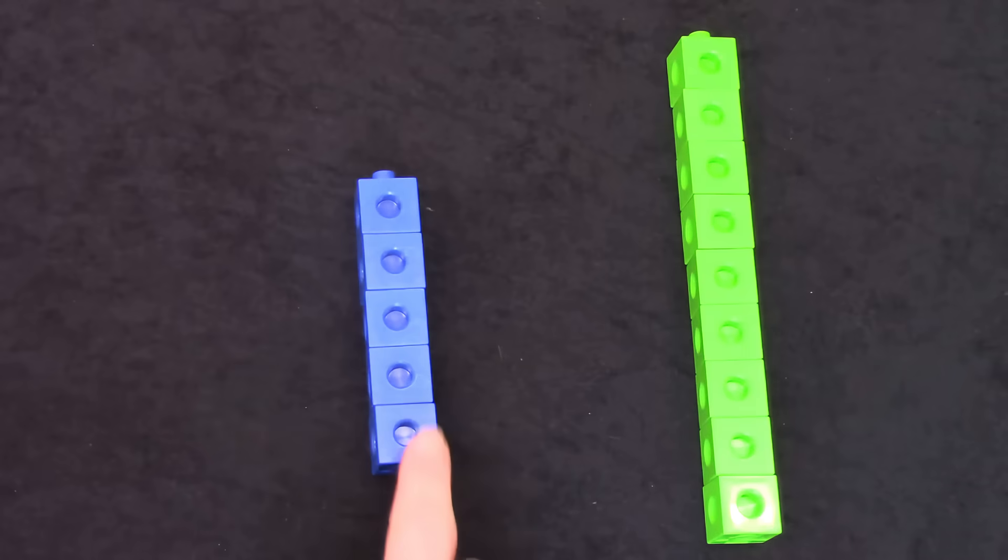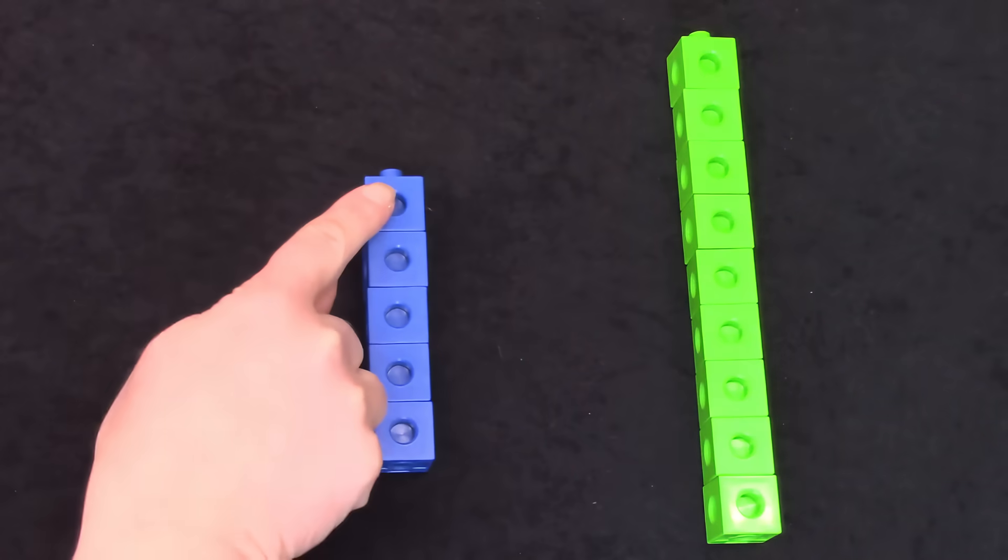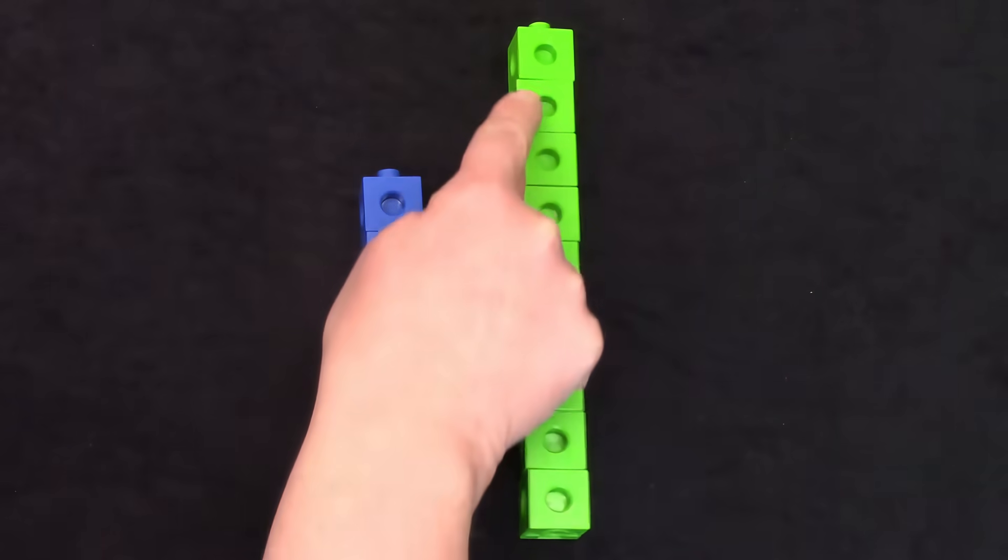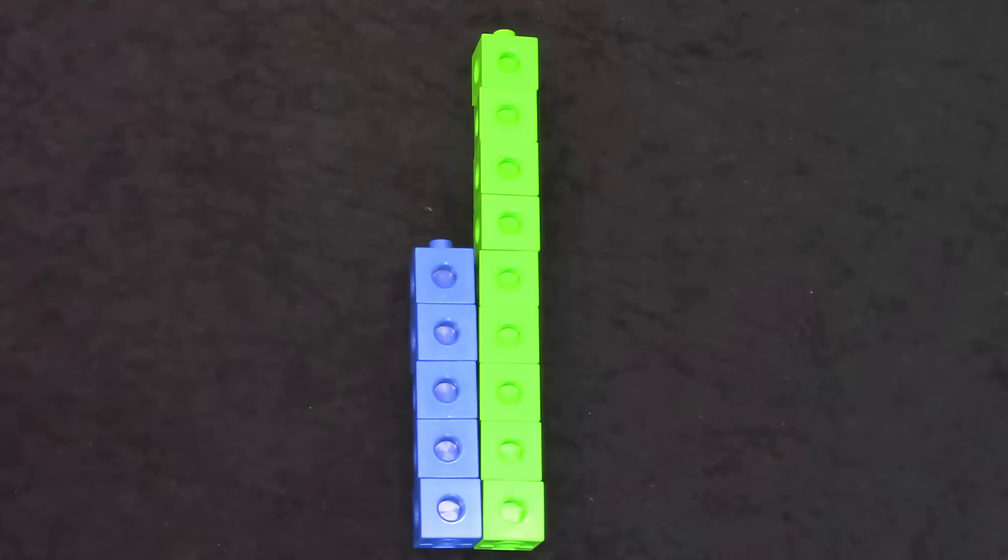Here I have 5: 1 2 3 4 5, and on this one I have 1 2 3 4 5 6 7 8 9. We are going to compare these two towers of blocks. Which one has more? It's the green one. How many more does the green one have?